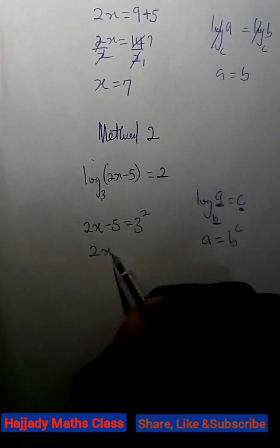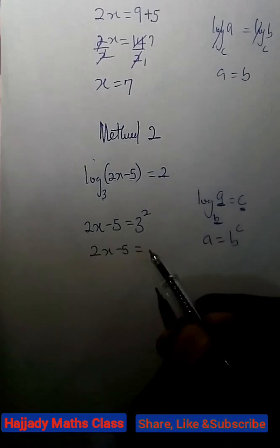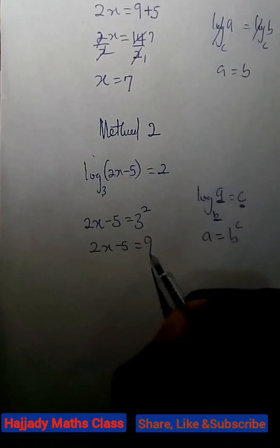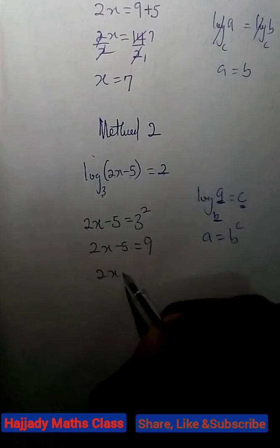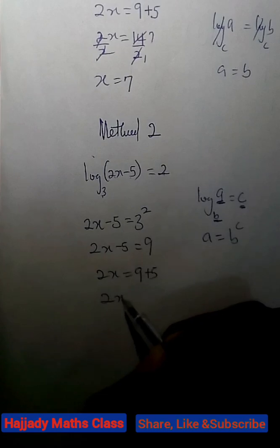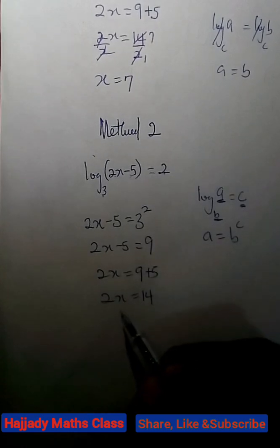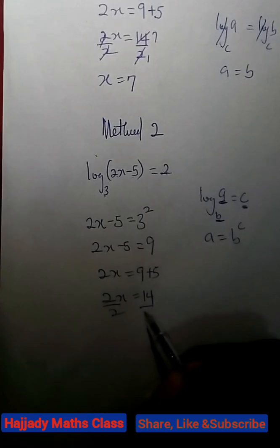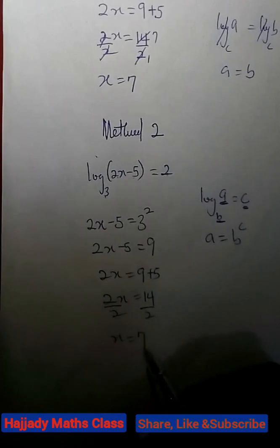Here we have 2x minus 5 equals, 3 raised to power 2 is the same as 9. So, we have 2x equals 9 plus 5. 2x equals 14. Divide by the coefficient of x and x is 7.